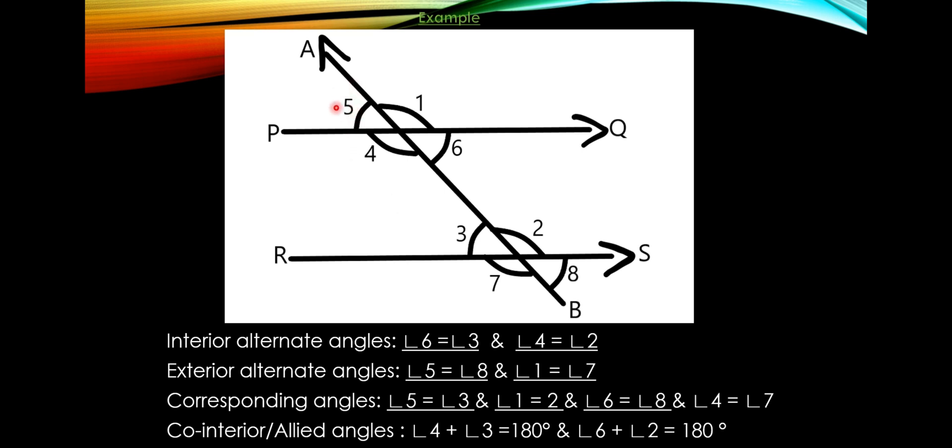For corresponding angles: angle 5 is formed on the exterior part and angle 3 on the interior part, lying on the same side of the transversal, so angle 5 equals angle 3. Similarly, angle 1 equals angle 2, angle 6 equals angle 8, and angle 4 equals angle 7 — giving four pairs of equal corresponding angles.